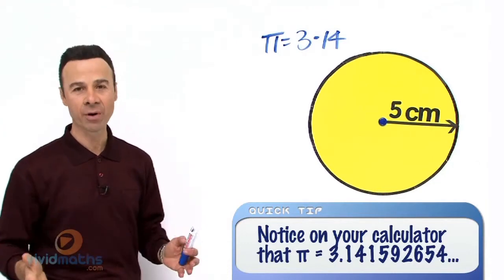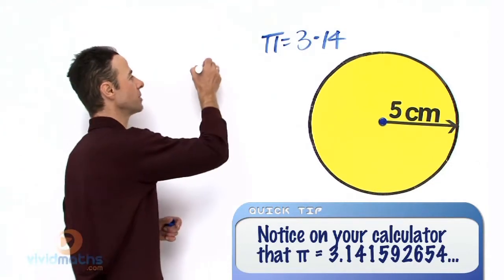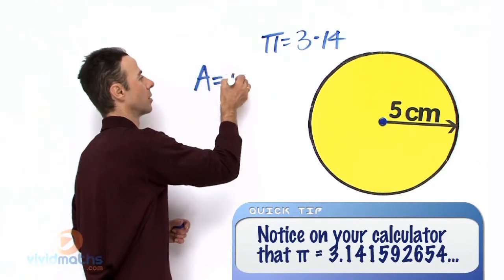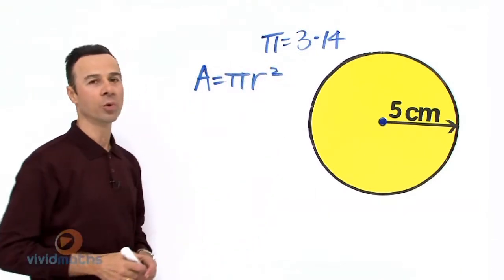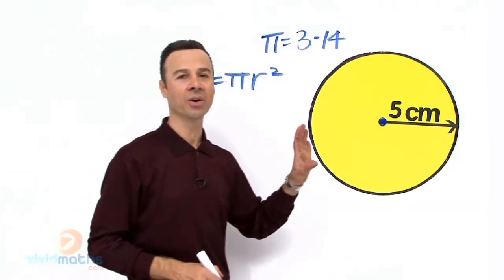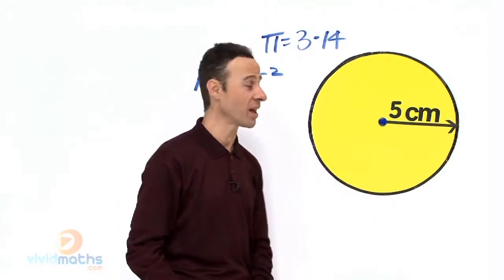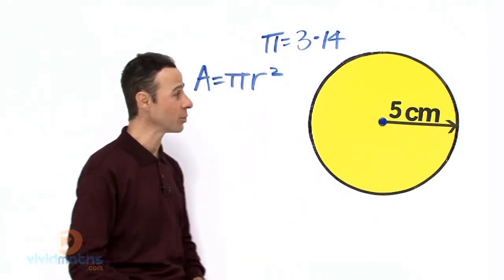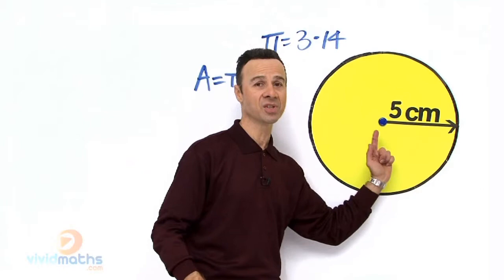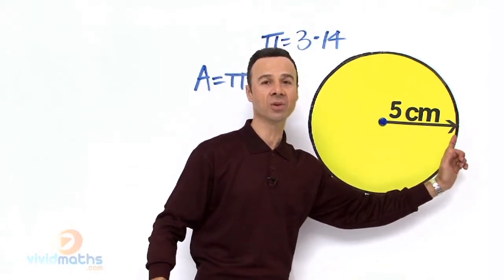Now what is the area for a circle? The area formula is A equals pi r squared. All we need to do is take the radius, which as you can see in this example is 5 centimeters from the center to the edge of this circle.